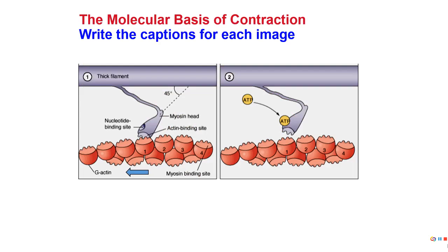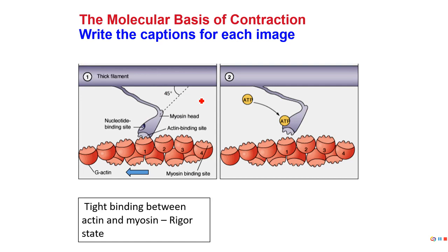We start off where we ended in the last video. Actin and myosin are binding — we call this the rigor state. They're tightly bound. This is where we get the term rigor mortis.